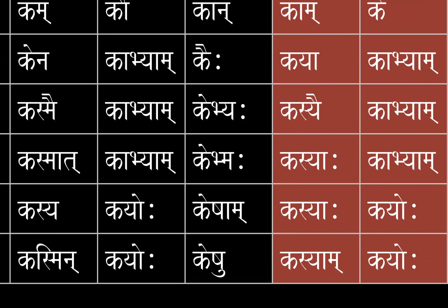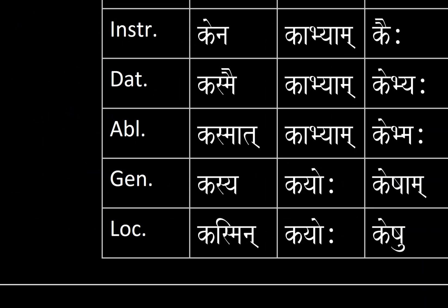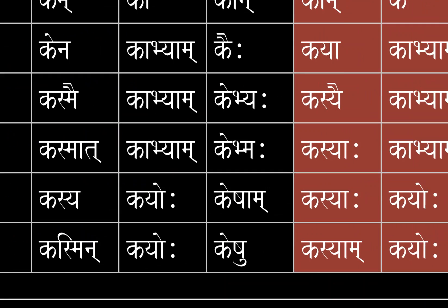For genitive singular, dual, and plural we have kasyai, kābhyām, and kāsām. For locative singular, dual, and plural we have kasyām, kayoḥ, and kāsu. Notice that there is not a vocative case here.